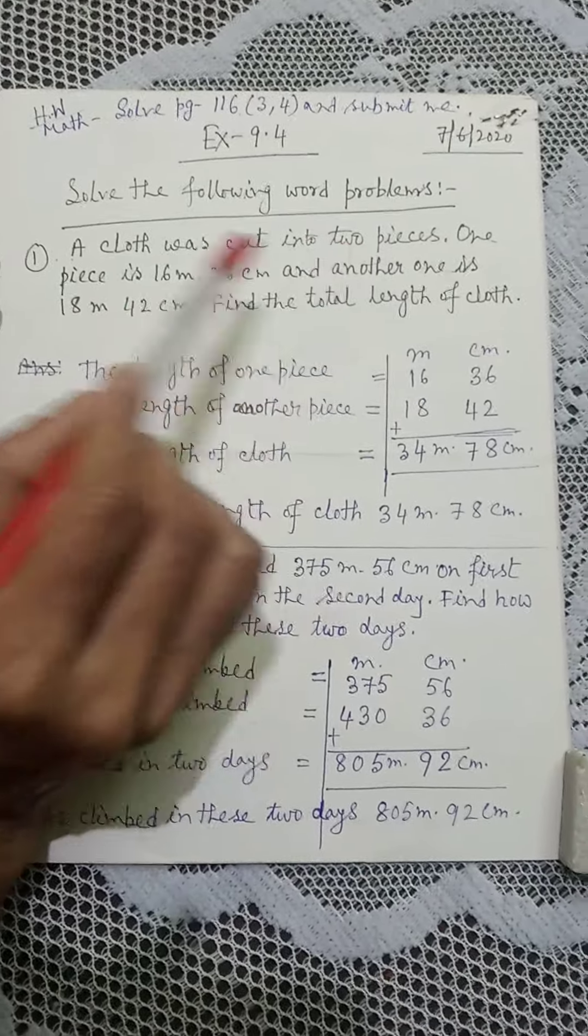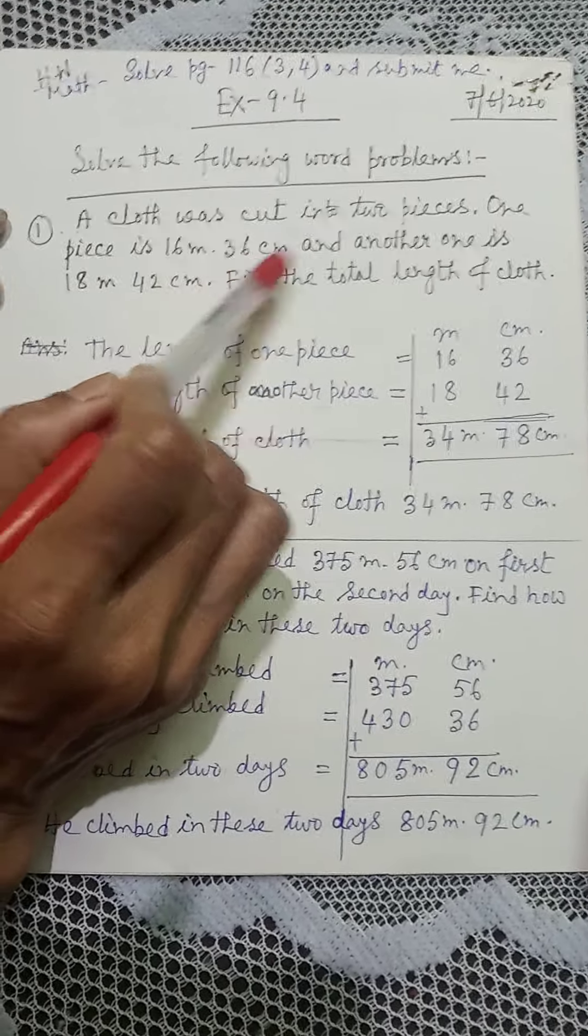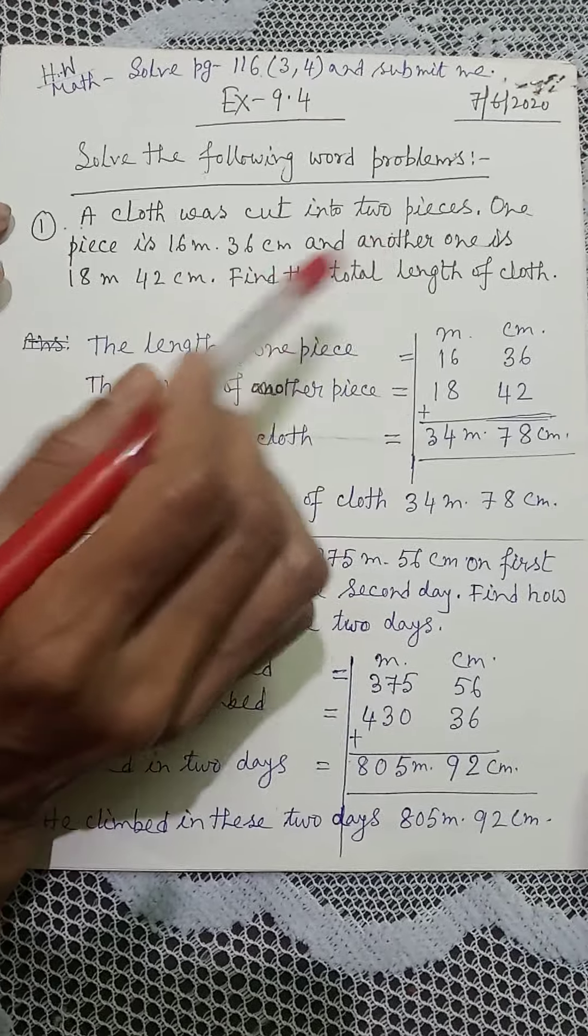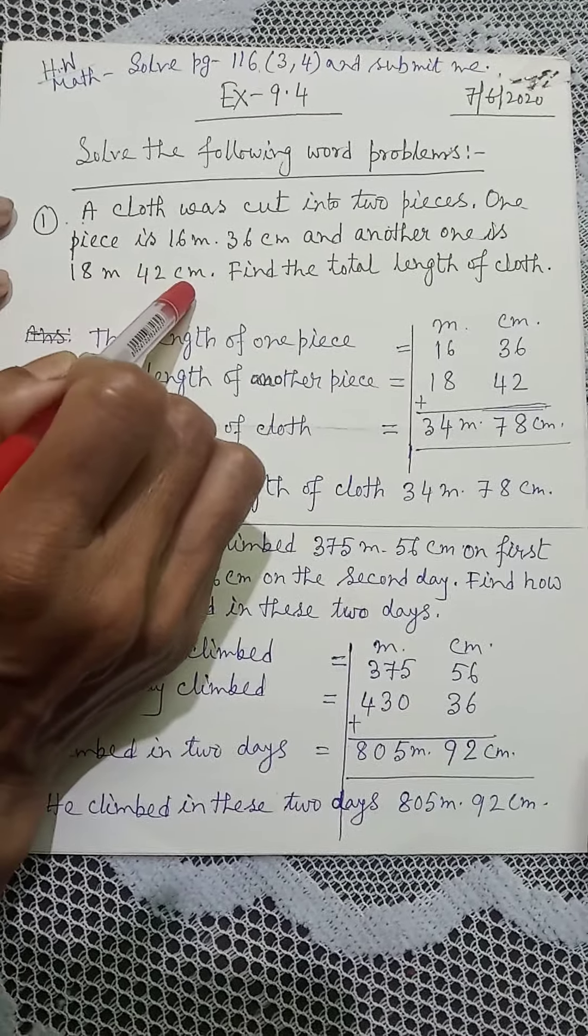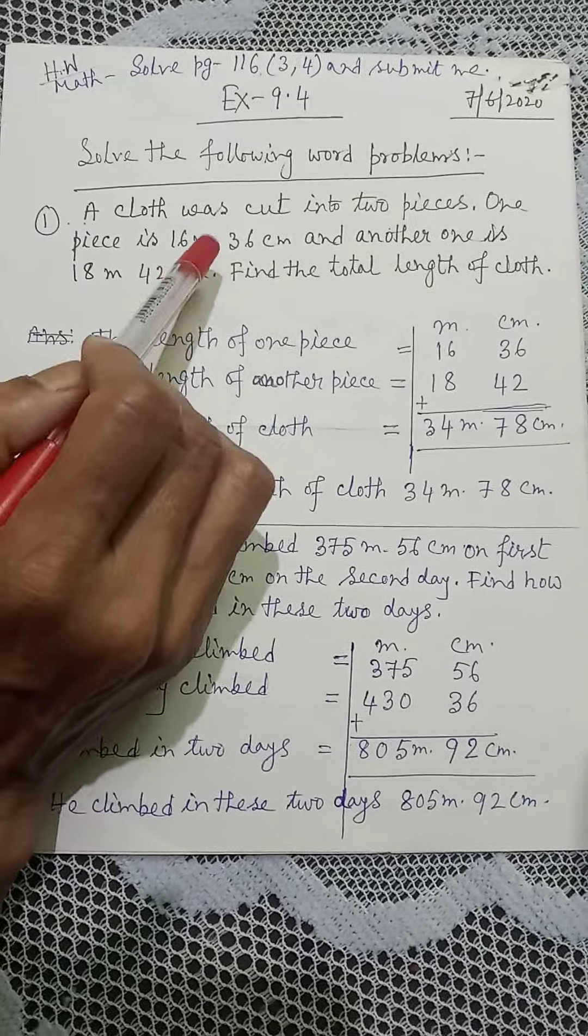Here we have one piece, one piece is 16 m 36 cm and another piece is 18 m 42 cm. Total length is how much? We will add.